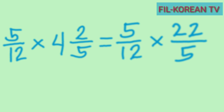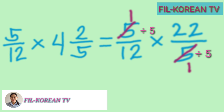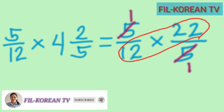We will multiply the two numerators and the two denominators, but first we use the cancellation method to simplify before multiplying. We look at the numerator of the multiplicand and the denominator of the multiplier for common factors other than one, and divide them by their GCF. The GCF of five and five is five, so we divide: five divided by five equals one, and five divided by five equals one.